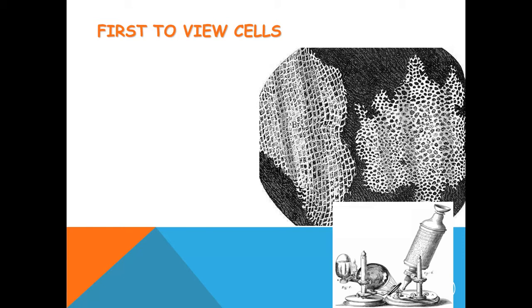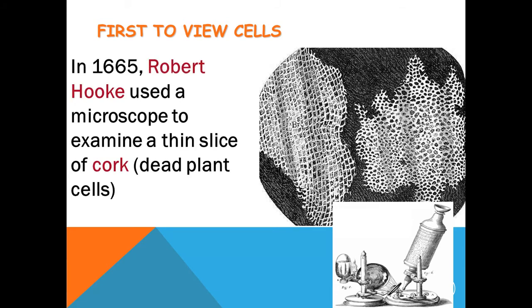Different types of cells are formed from a single cell, the stem cell. Today we know about cells, but who was the first to observe the cells under the microscope? In 1665, Robert Hooke used a microscope to examine a thin slice of cork, that is dead plant cells. He was able to see a bunch of small boxes.